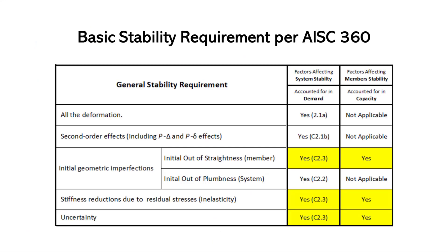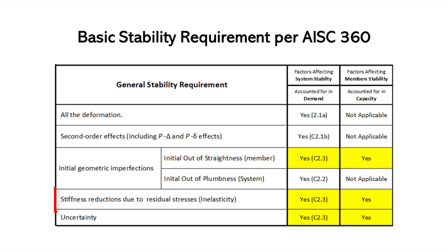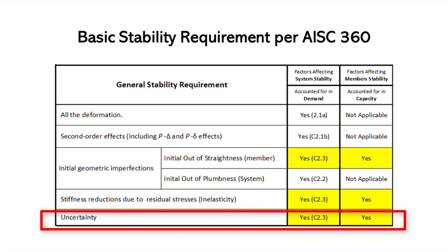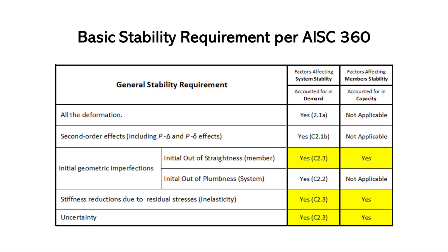I have summarized the general requirements in a table for better understanding. Most concerns are taken care of while determining the required strength. However, three factors that affect stiffness and strength — member initial out-of-straightness, inelasticity due to residual stress, and the uncertainty factor — impact both member capacity and structural response. These concerns are addressed while calculating both member available strength and required strength. This understanding forms the basis of the philosophy of the current stability analysis and design in AISC 360.